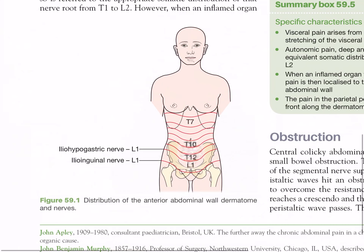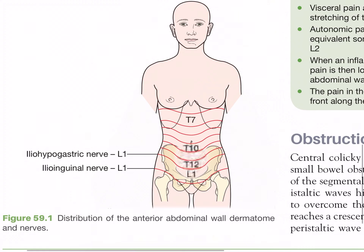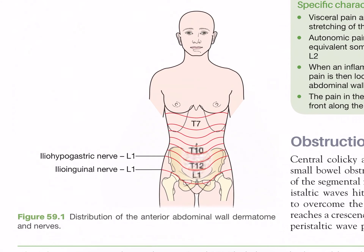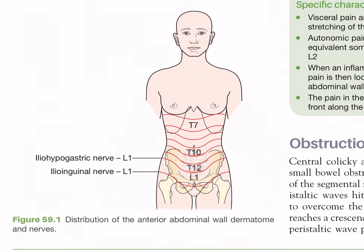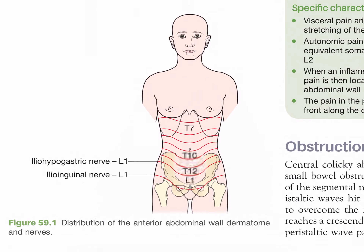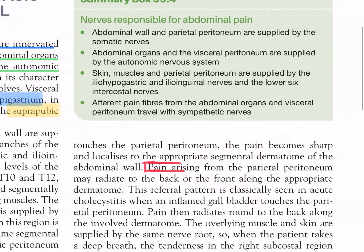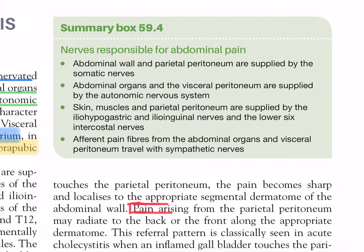Figure 59.1 shows the distribution of the anterior abdominal wall dermatomes and nerves, including the iliohypogastric nerve (L1). Nerves responsible for abdominal pain: the abdominal wall and parietal peritoneum are supplied by somatic nerves, while abdominal organs and visceral peritoneum are supplied by the autonomic nervous system. Skin, muscle, and parietal peritoneum are supplied by the iliohypogastric, ilioinguinal (L1), and the lower six intercostal nerves. Afferent pain fibers from abdominal organs and visceral peritoneum travel with sympathetic nerves.